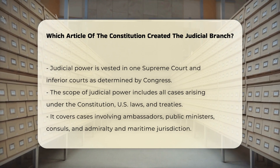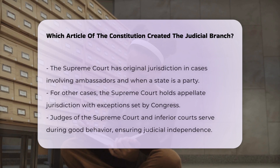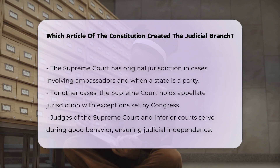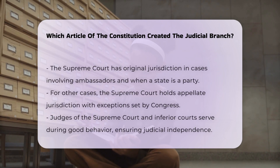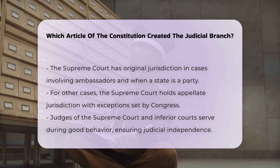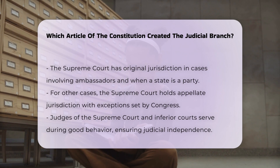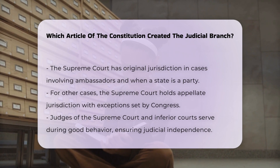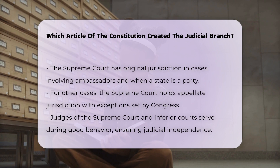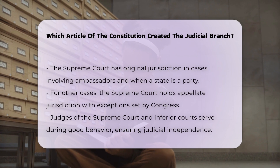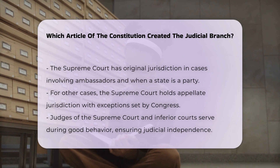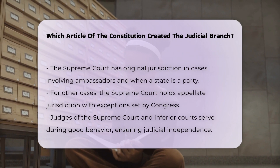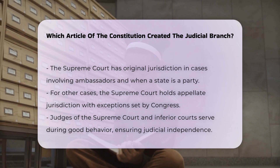The Supreme Court has original jurisdiction in cases involving ambassadors, public ministers, and consuls, and in cases where a state is a party. For other cases, the Supreme Court has appellate jurisdiction, both as to law and fact, with exceptions and regulations as Congress may make.